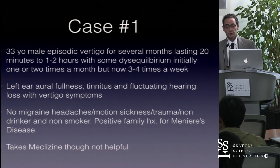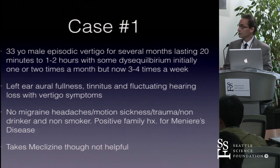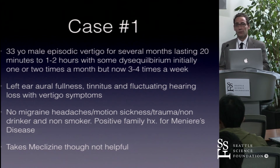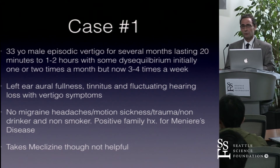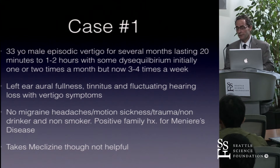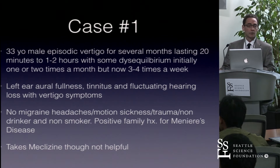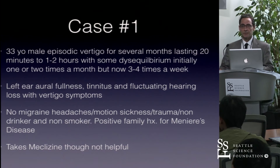Case one is a 33-year-old male with episodic vertigo for several months, lasting 20 minutes to one to two hours with disequilibrium. Initially one to two times a month, then increasing to three to four times a week. His left ear had aural fullness, tinnitus, and fluctuating hearing loss with vertigo. No history of migraine, motion sickness, or trauma. He was a non-drinker, non-smoker, with a positive family history of Meniere's disease. He had taken meclizine without benefit.